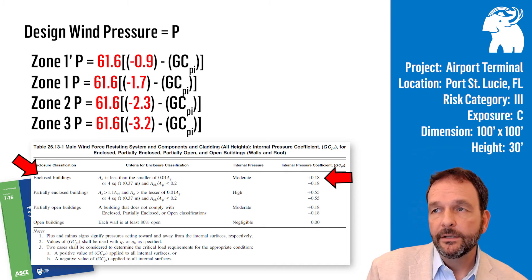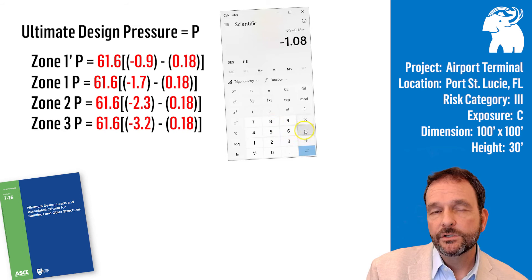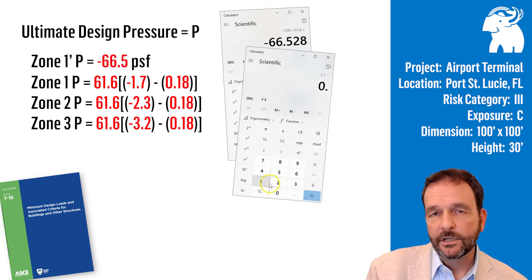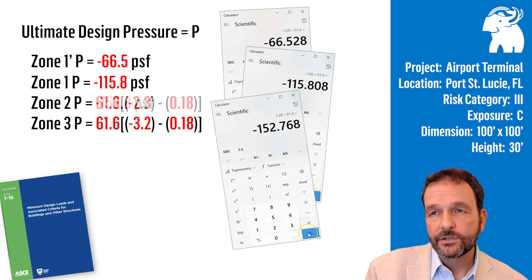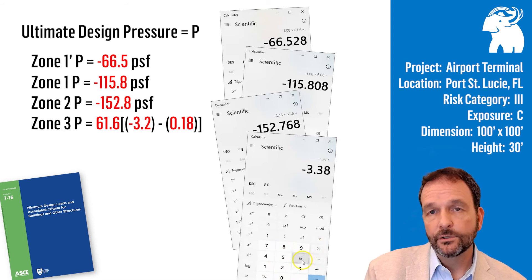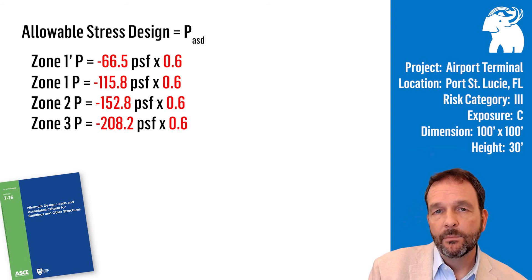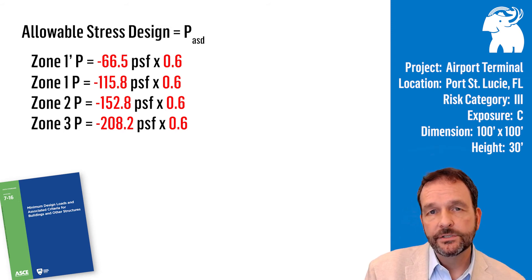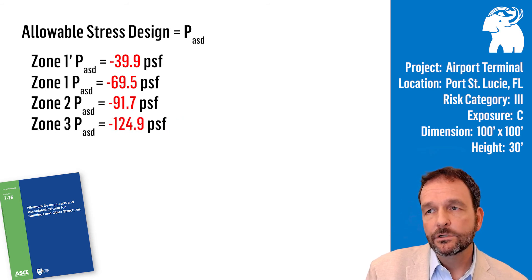Now we have all the variables we need for the design pressure for all roof zones. We can plug those values in to our equations and solve for the ultimate design pressures. The ultimate design pressures are because we use ultimate design wind speeds from our risk category maps. But we want the allowable stress design pressures in order to select our low slope roofing. So we multiply the ultimate design pressures by a load reduction factor of 0.6. We multiply each roof zone design pressure by 0.6, and now we can determine the allowable stress design pressure, the PASD, for each roof zone.